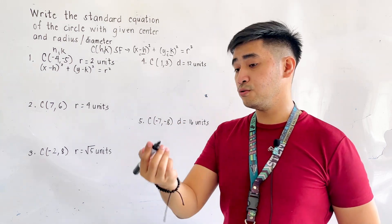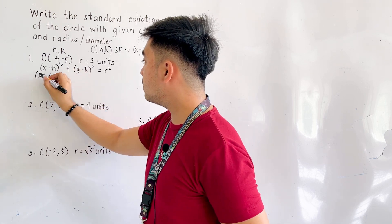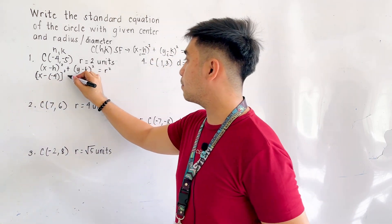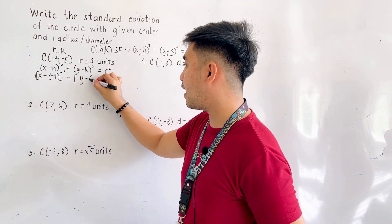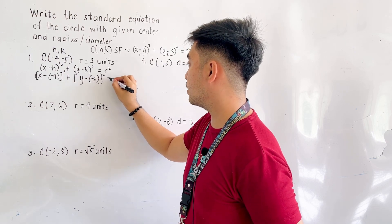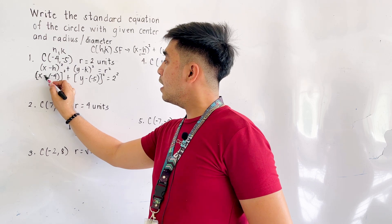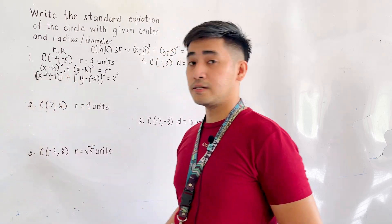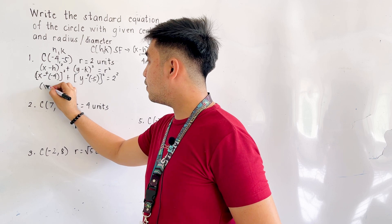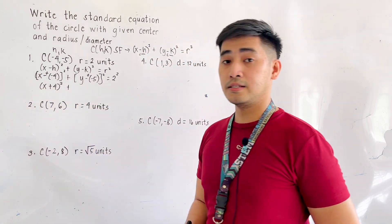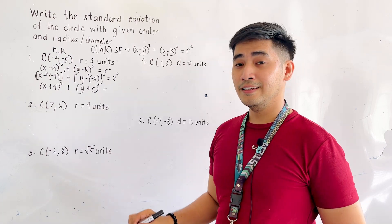Let us now substitute that into the equation. It becomes x minus negative 4, quantity squared, plus y minus negative 5, quantity squared, is equal to 2 squared. Simplifying: x minus minus becomes plus, and y minus minus also becomes plus. Therefore, we get x plus 4, quantity squared, plus y plus 5, quantity squared, is equal to 4.